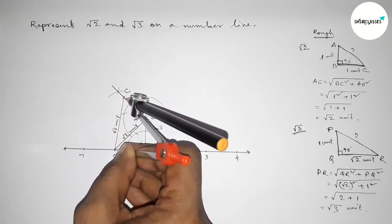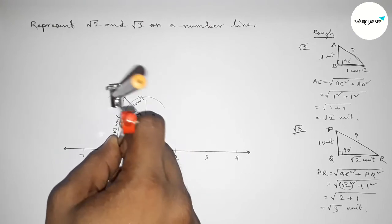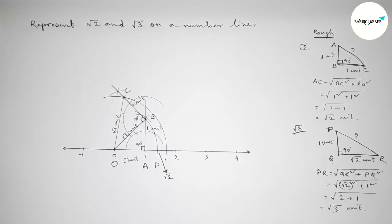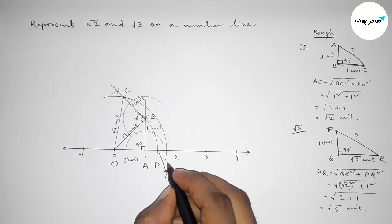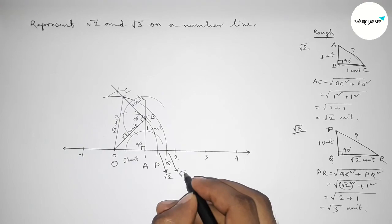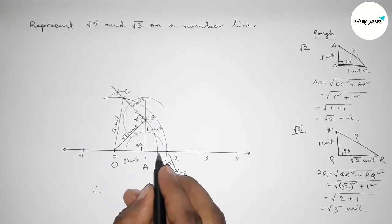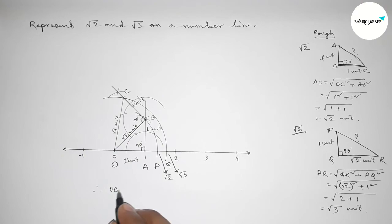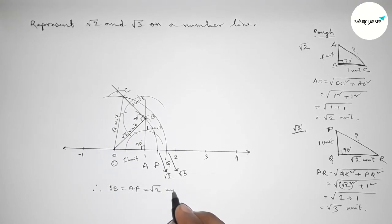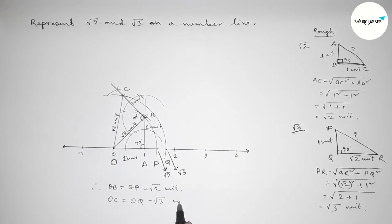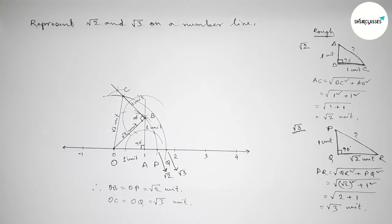Taking the length OC using compass and drawing an arc through point C which meets the number line at a point — taking that point as Q, this is root 3 on the number line. Therefore OB equals OP equals root 2 units, and OC equals OQ equals root 3 units. That's all. Thanks for watching — if this video is helpful to you then please share it with your friends.